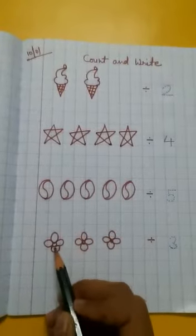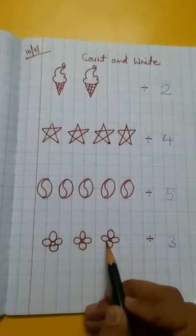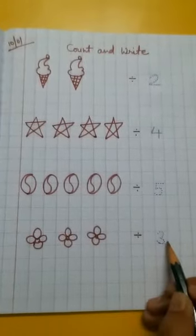Next is how many flowers? One, two, three. So write here number three.